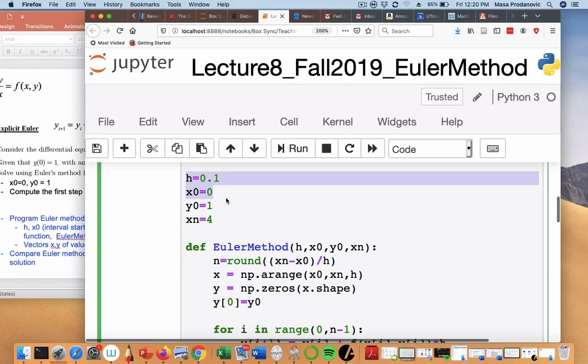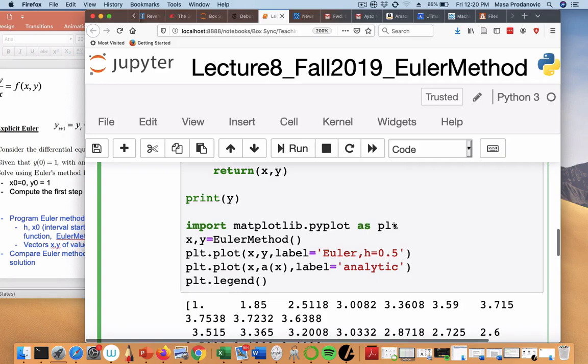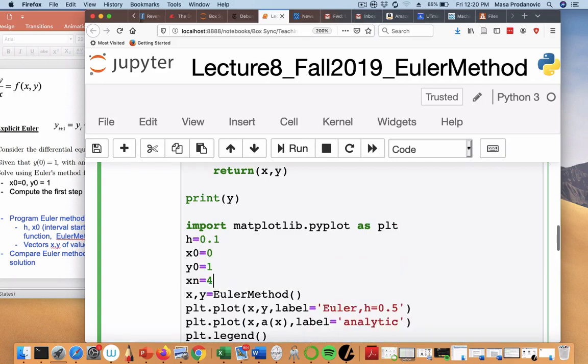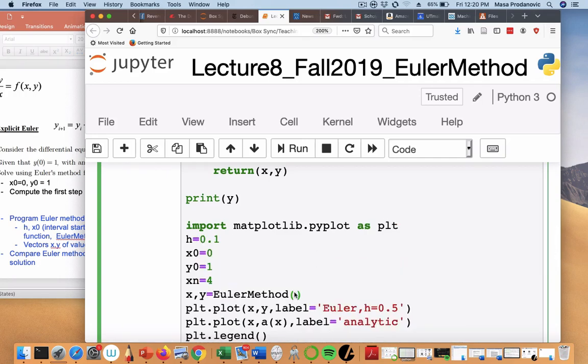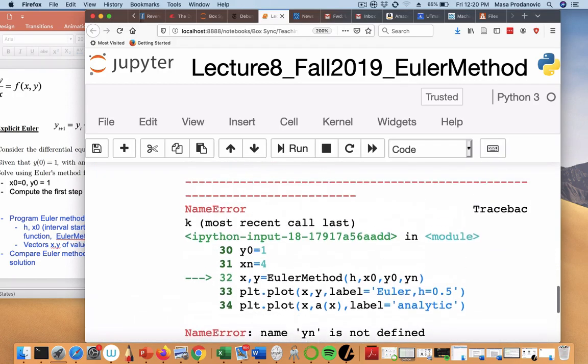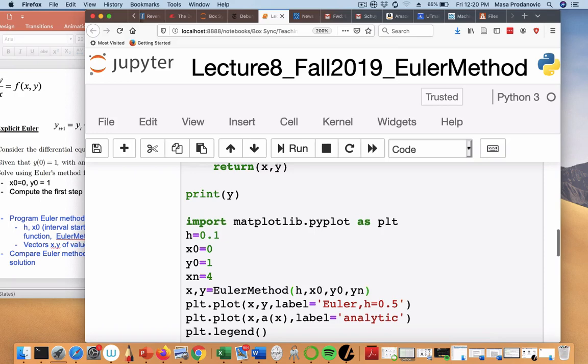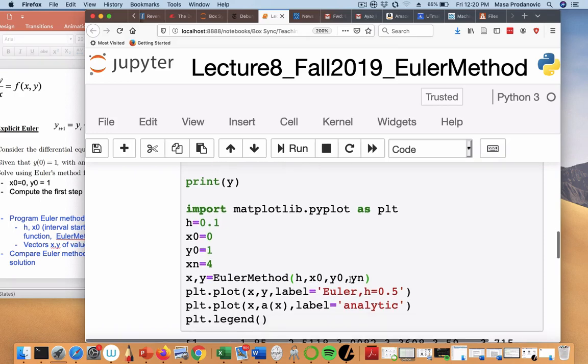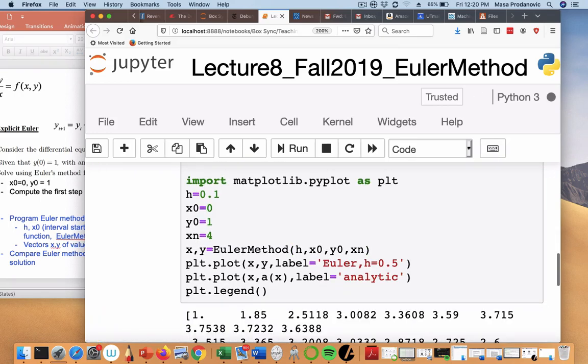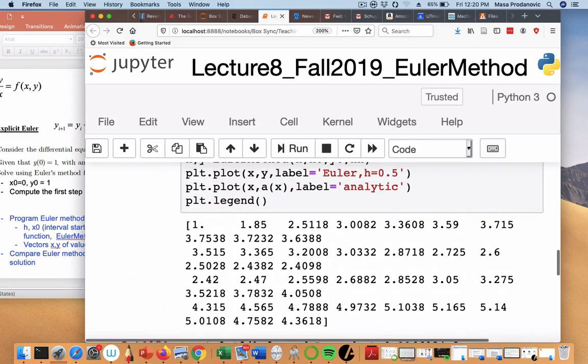And now, what I need before plotting here is x, y is Euler method of these values. h, x0, y0, yn. Does it still work? Something doesn't work. Yn is not defined. Oh, well, because it's not. Okay. It still works.